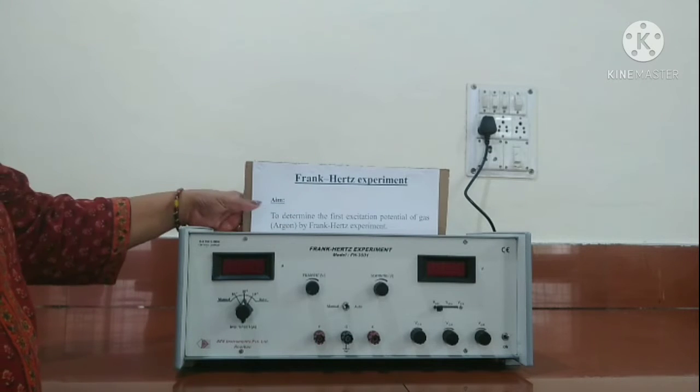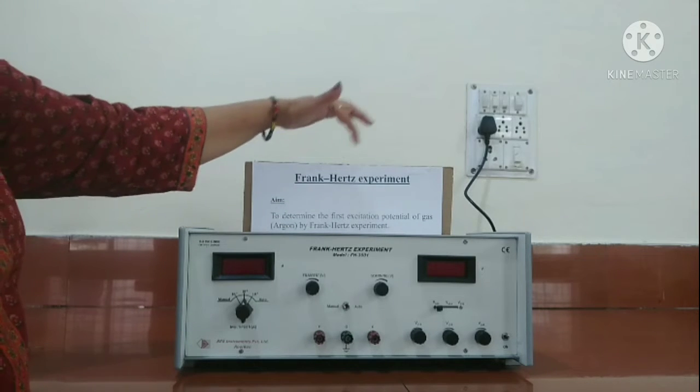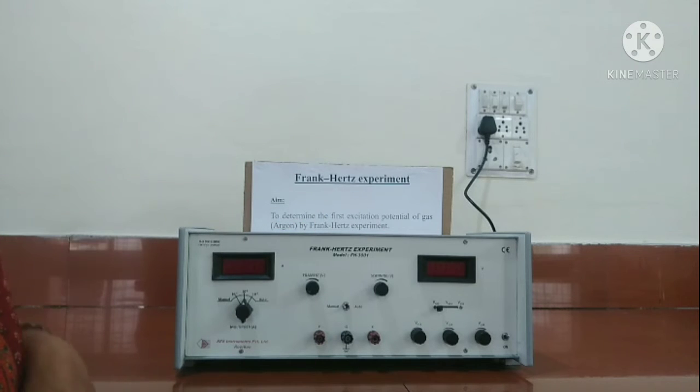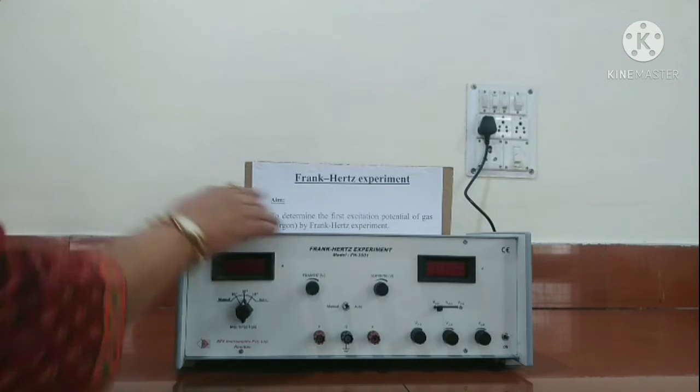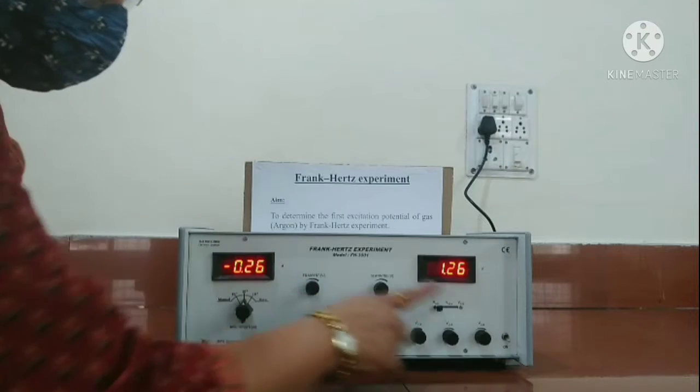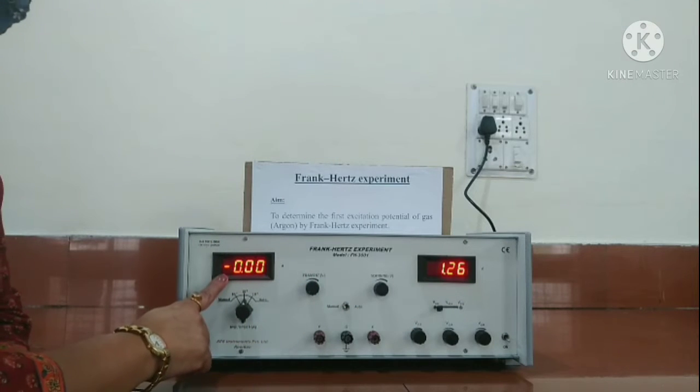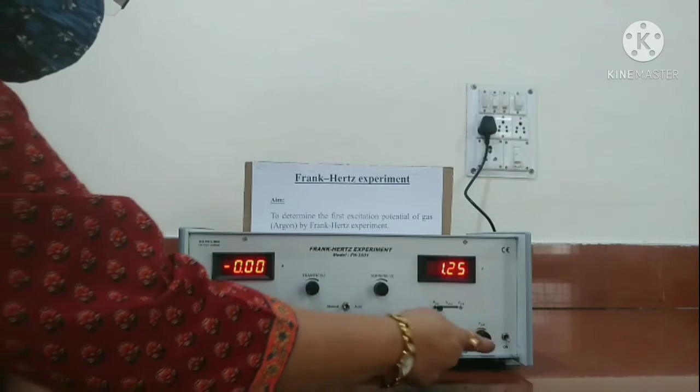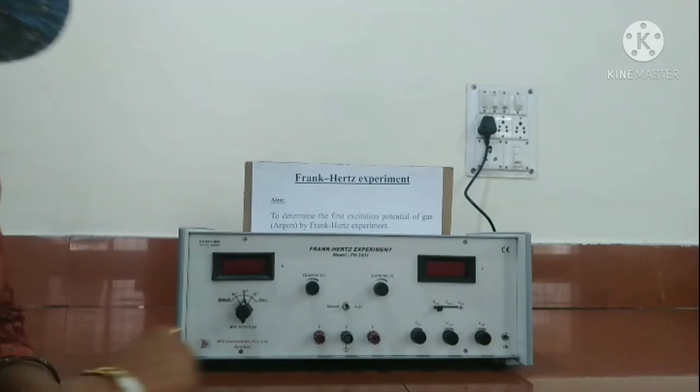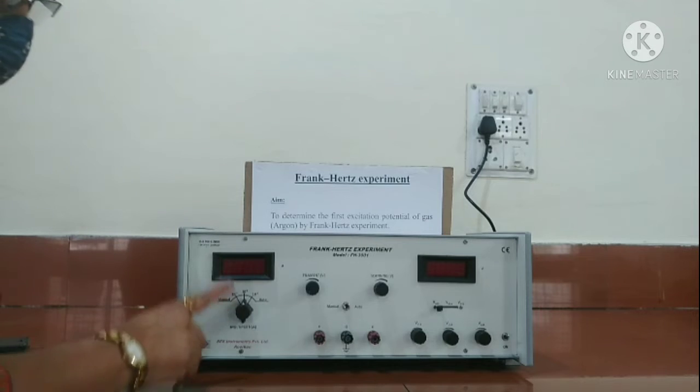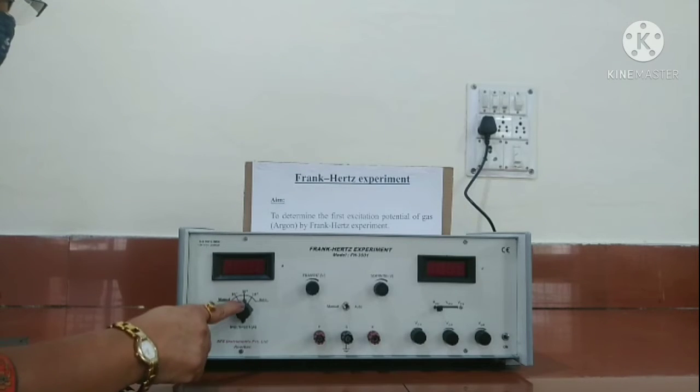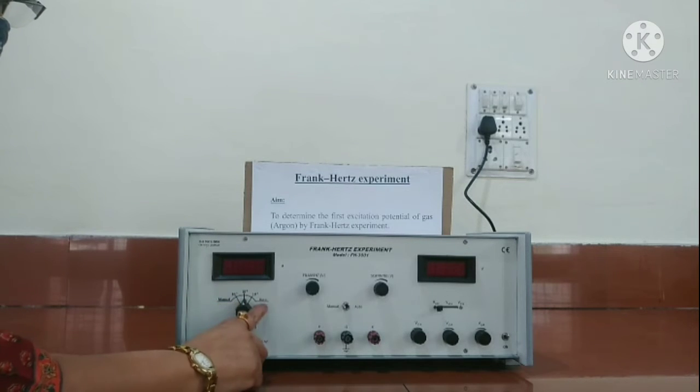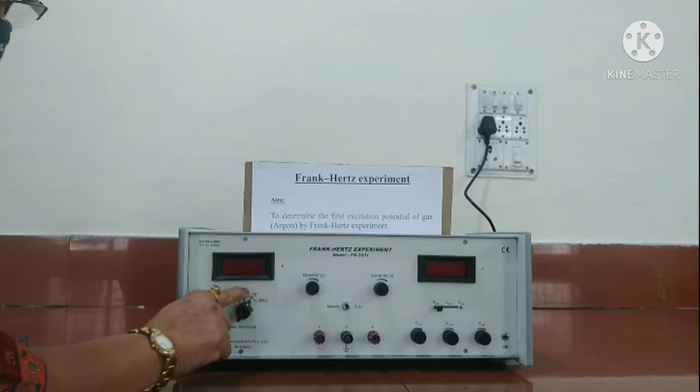This is the setup for Frank-Hertz experiment. The tetrod tube is kept inside this box. We have this as a current display unit, and this is the voltage display. It shows all the voltages with respect to all the grids. This is our current multiplier. We can put it at 10^-9 or 10^-8 or 10^-7 amperes according to our need.